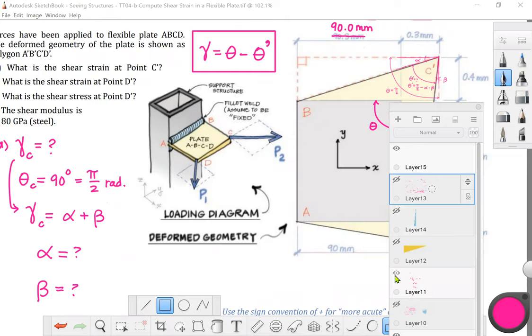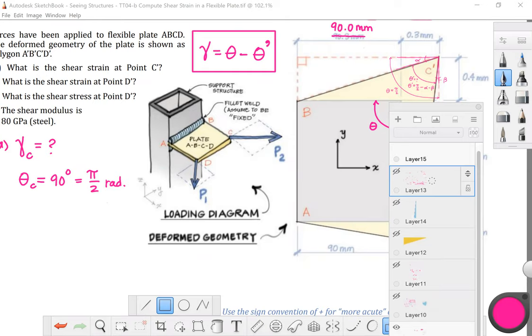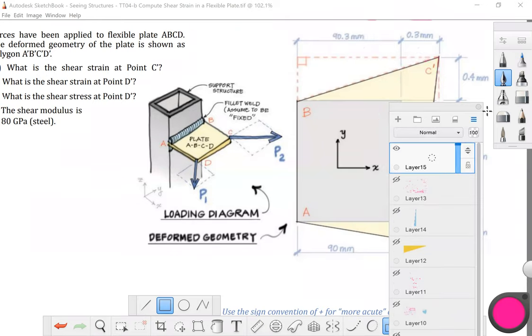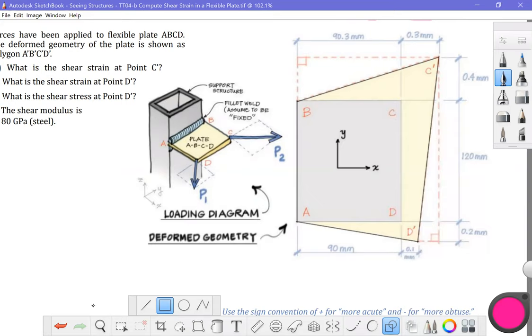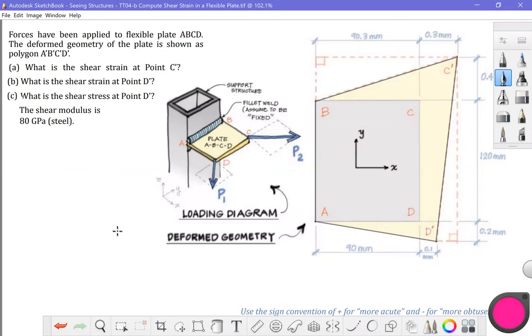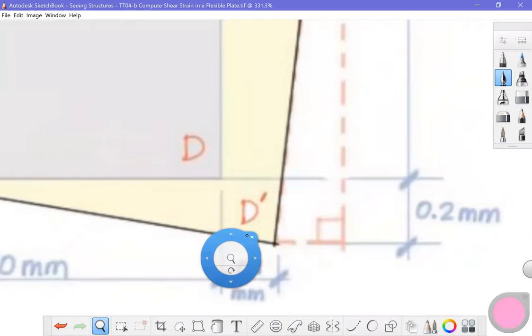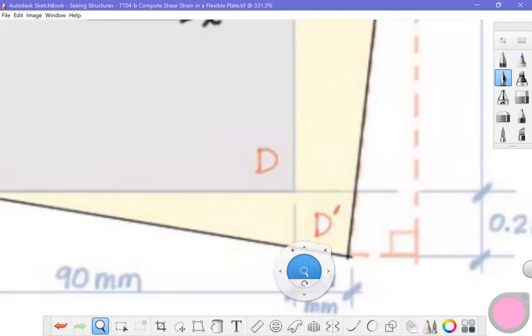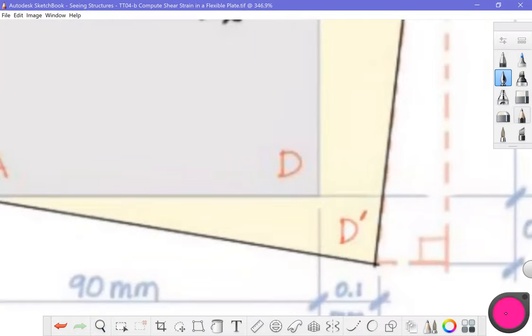Turn some of the layers off. Let's proceed to the second part of the problem. And part B says, what is the shear strain at point D prime? What is the shear strain at point D prime? Let's do the same thing. So I'm going to zoom in over here. Prior to deformation, theta D is equal to pi over 2 radians. Here is theta prime D. That's right here.